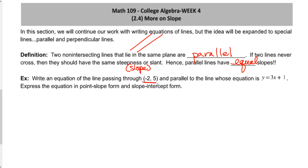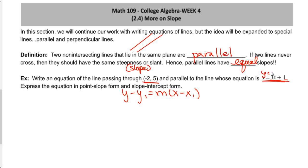We're going to write the equation of a line that passes through a given point. We always need a point and a slope, and it's parallel to y = 3x + 1. Our point-slope form requires a point and a slope. They gave me my point. I need to steal the slope from this equation — m equals 3 — and since we want a parallel line, the parallel slope is also 3.